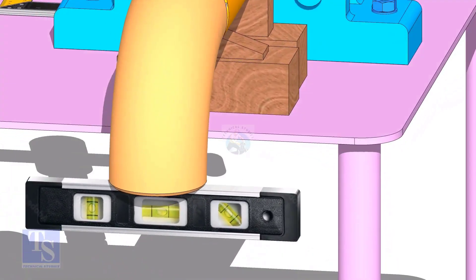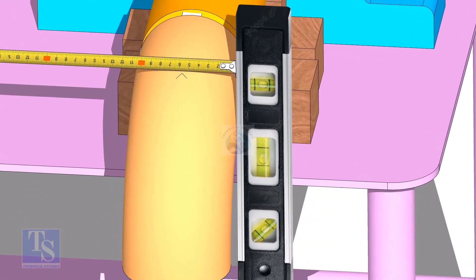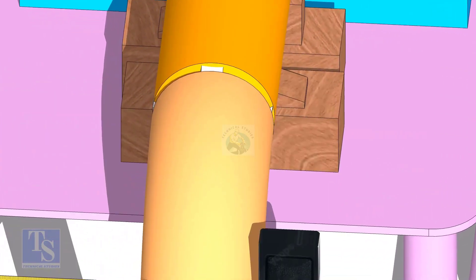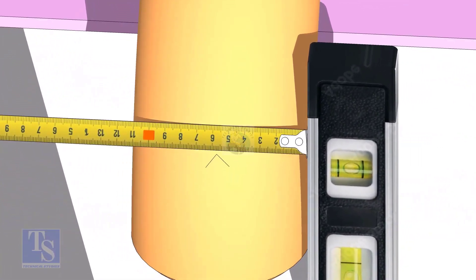Mark the center line of the elbow. OD of a 4 inch pipe is 114mm. Hold a level bottle at the side of the elbow vertically, and mark 57mm on the elbow at least three locations, as shown.